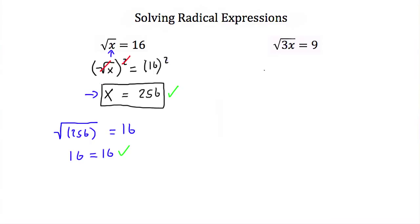Now let's try this again. Here we have the square root of 3x is equal to 9. Now x is not alone underneath the square root sign, but that doesn't matter — we still need to get rid of the square root sign. So we're going to square both sides: on the left-hand side, we square the square root of 3x, and on the right-hand side, we square 9.